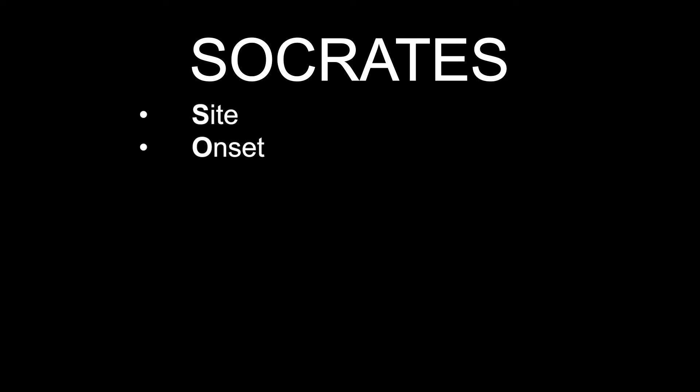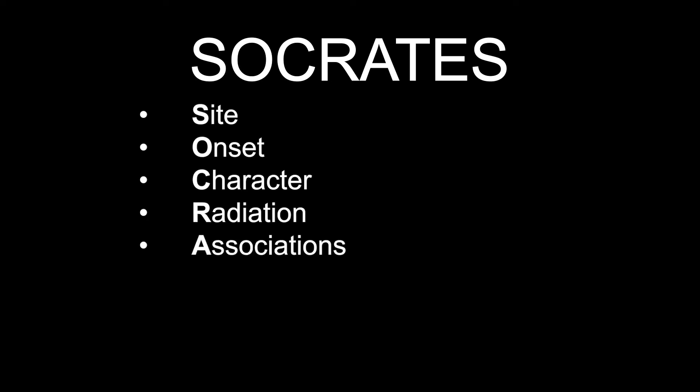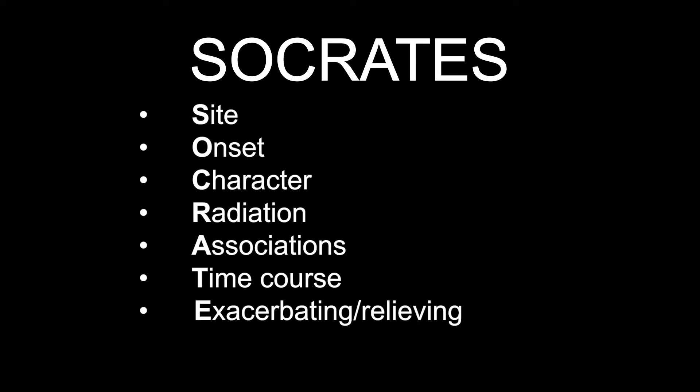Take a pain history using the SOCRATES acronym. Site: where is the pain or the maximal site of the pain? Onset: when did the pain start and was it sudden or gradual, and is it progressive or regressive? Character: what is the pain like — is it an ache, stabbing, or burning? Radiation: does the pain radiate anywhere? Associations: are there any signs or symptoms associated with the pain? Time course: does the pain follow any pattern? Exacerbating or relieving factors: does anything change the pain? Severity: how bad is the pain?